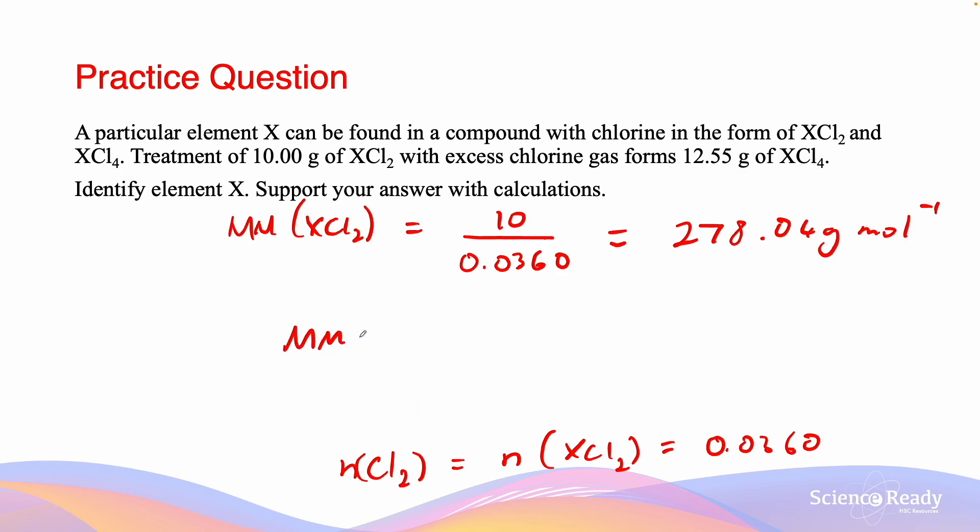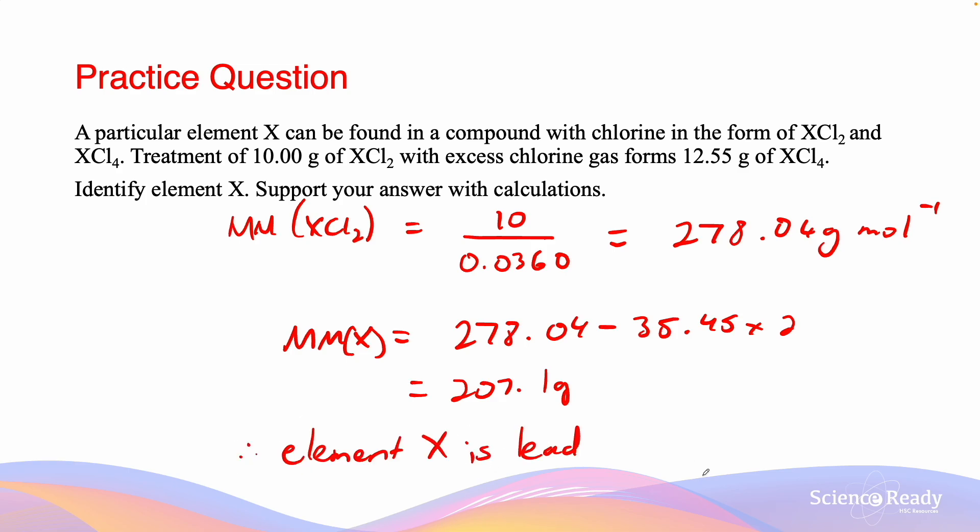The molar mass of X has to equal 278.04 minus 35.45 times 2, and that equals 207.1 grams. Looking at the periodic table, element X is lead because it has the closest molar mass to 207.1 grams.